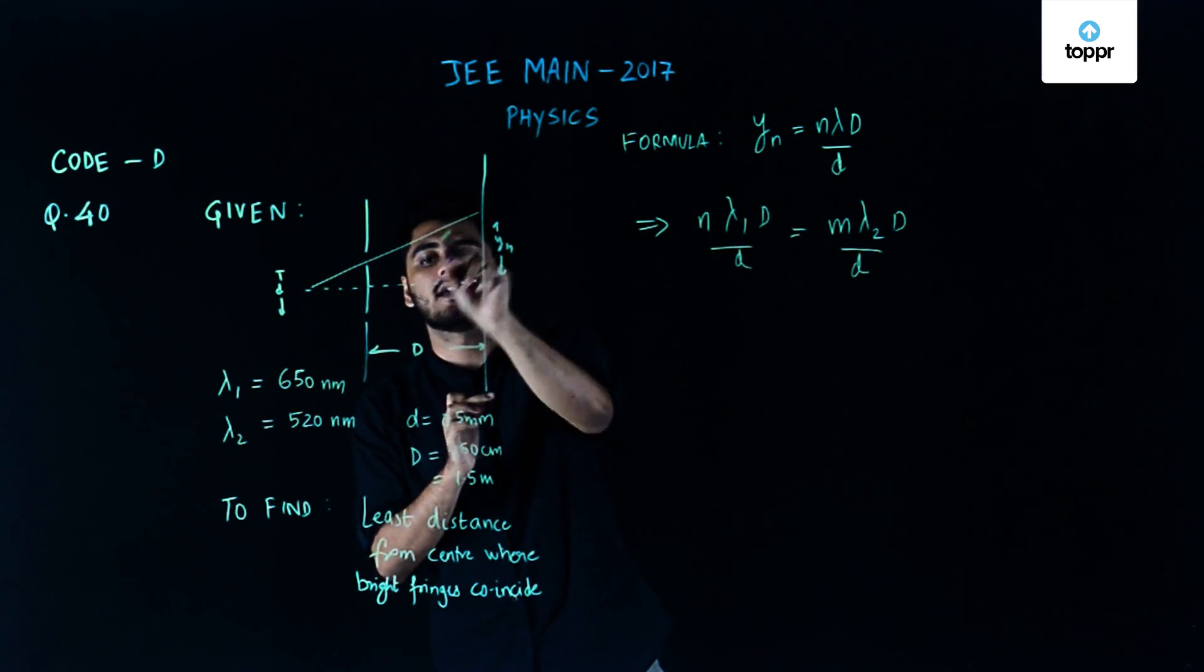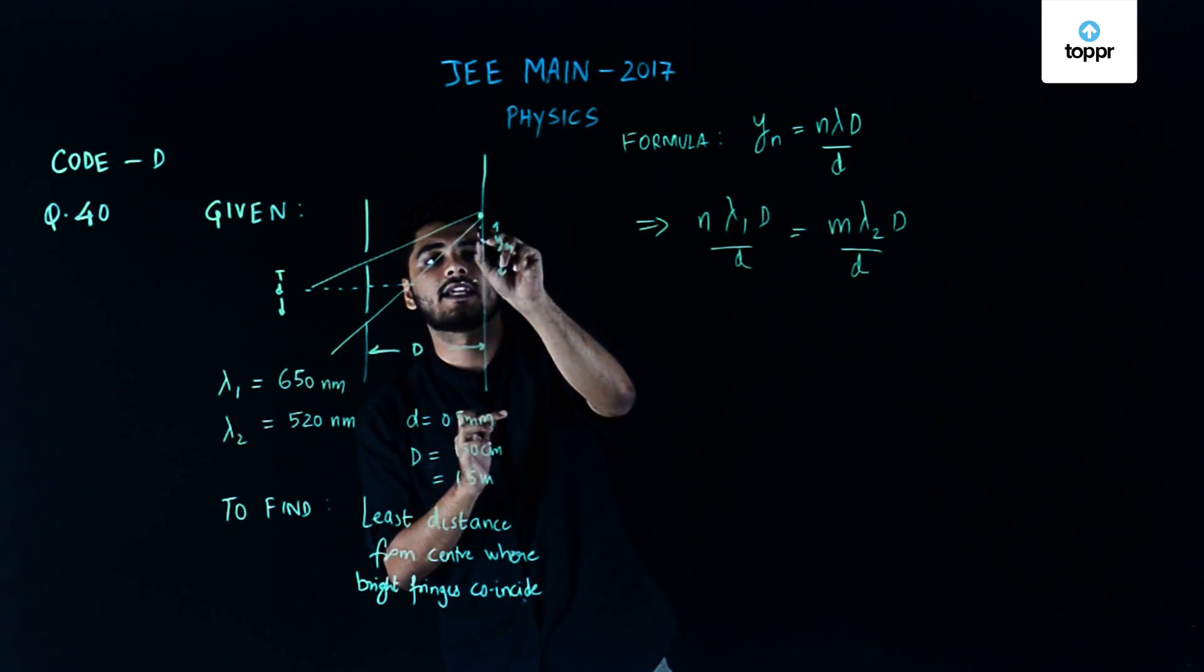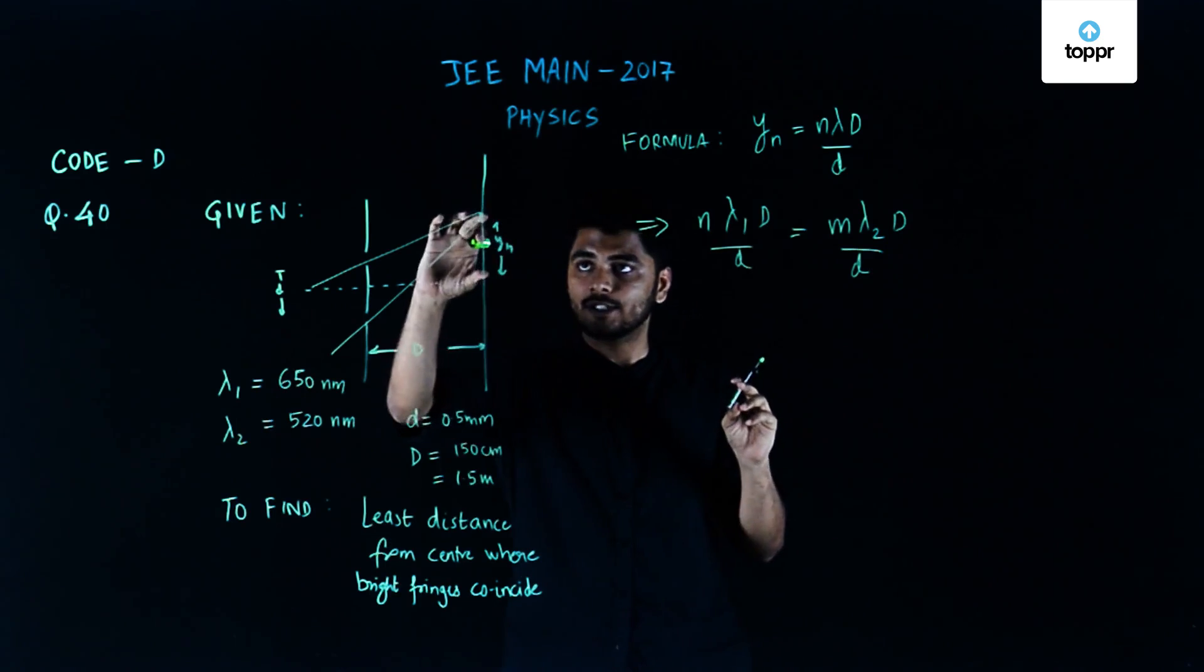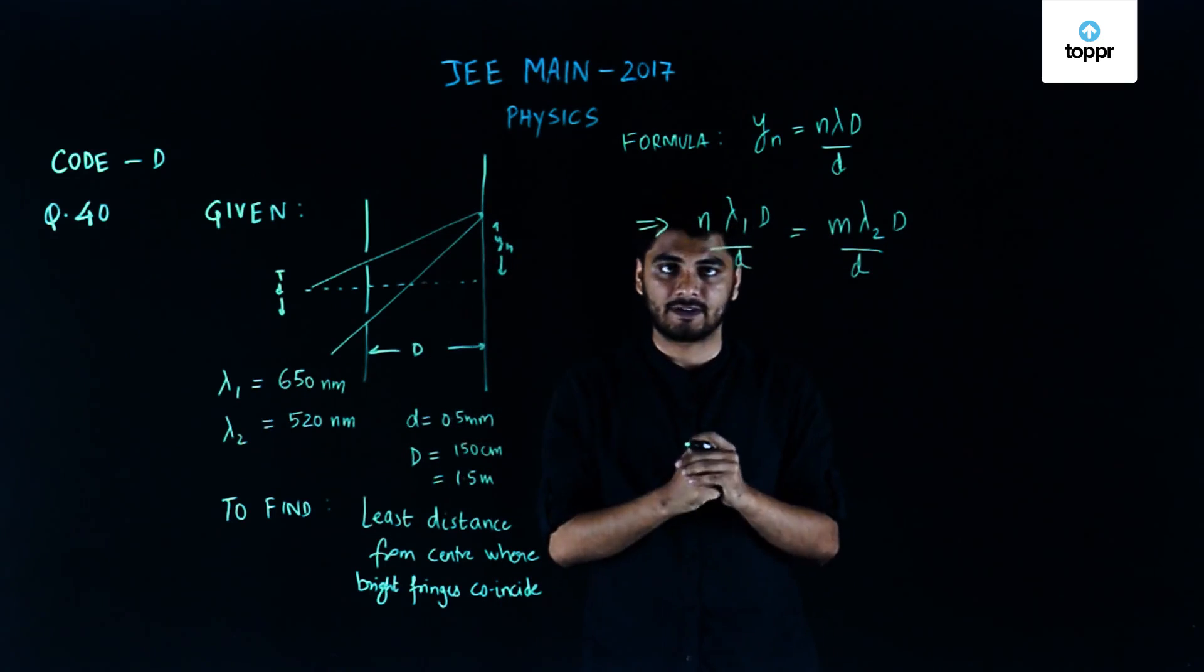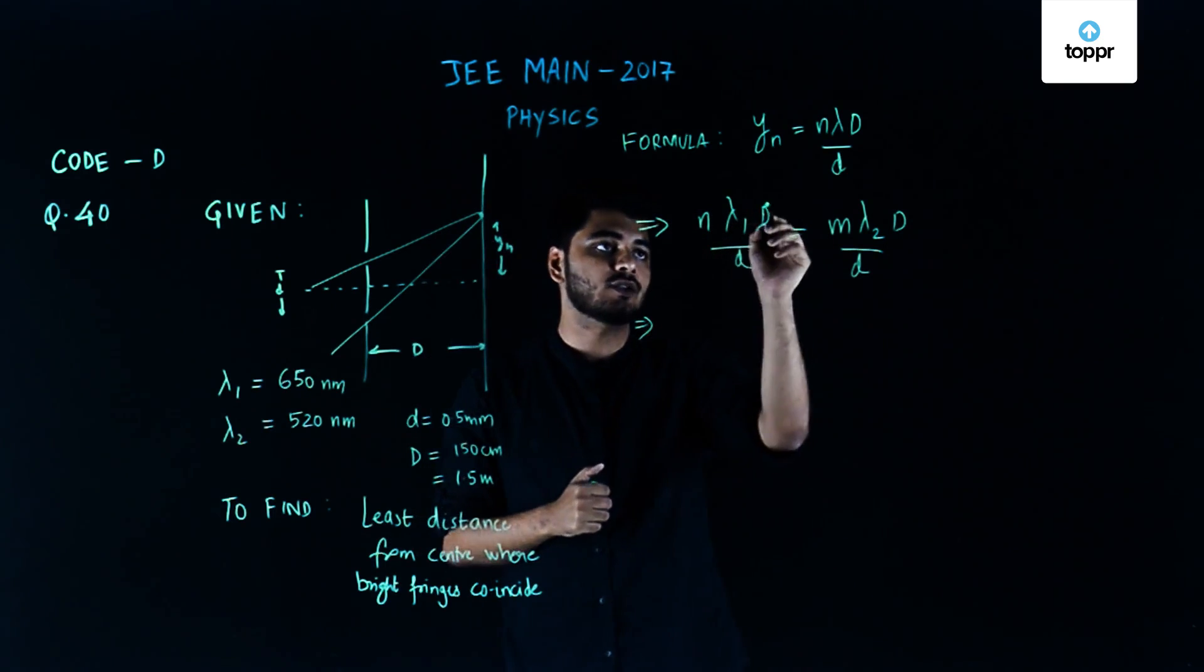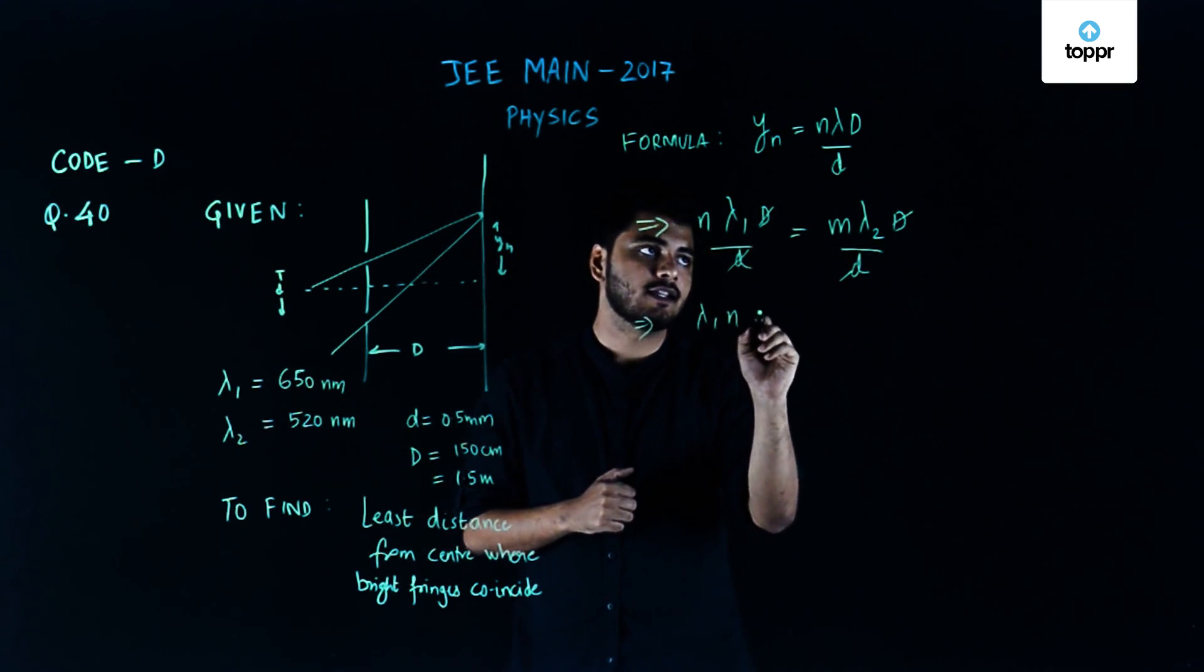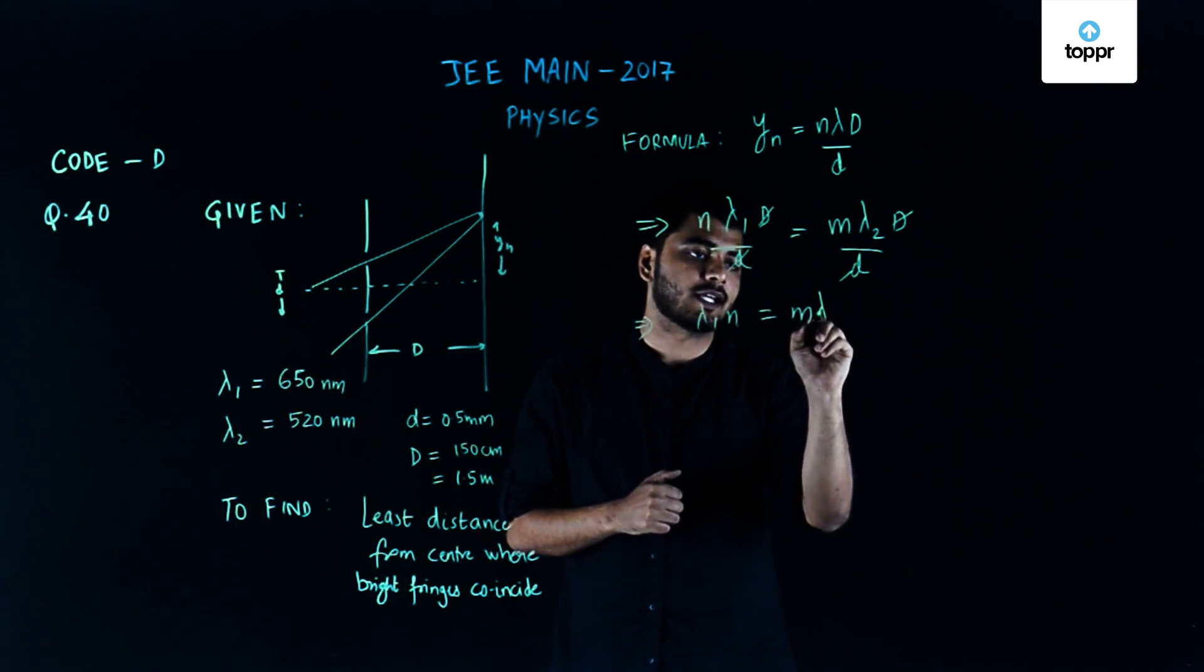If my maxima coincide here at yn, these two must be equal because for the y position to be the same this condition must satisfy. In order to solve this, I notice that capital D and small d cancel out, and hence lambda 1 times n equals m times lambda 2.